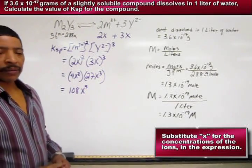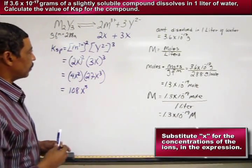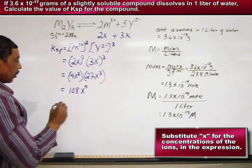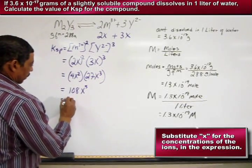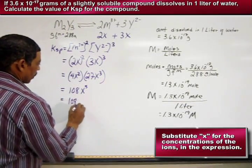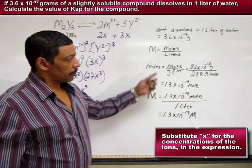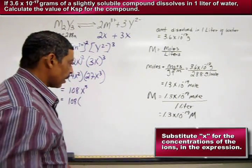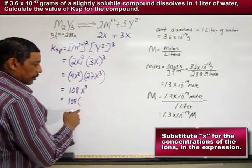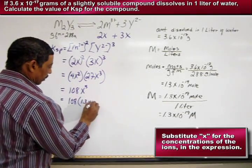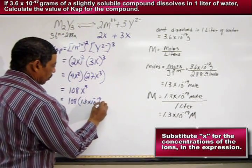Remember, X actually represents the molar solubility of the compound. So now we may substitute for X the solubility determined from the previous calculation. So now we substitute 1.3 times 10 to the -19 molar.